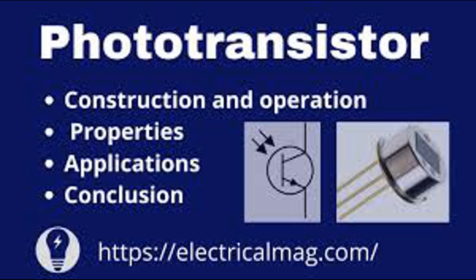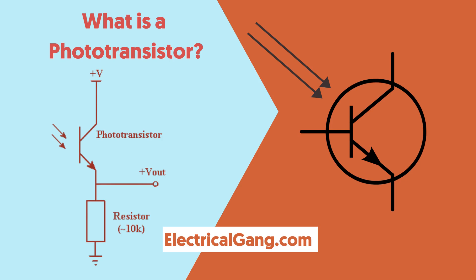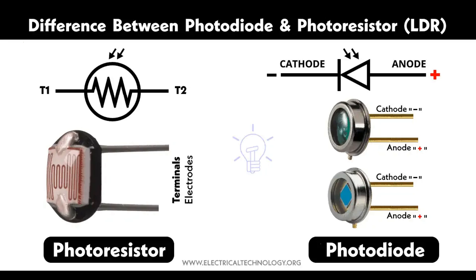Light meters use phototransistors to convert light intensity into an electrical signal proportional to the amount of light detected. Used in cameras for exposure control, scientific instruments, and environmental monitoring systems. Optical switches detect the presence or absence of an object, or count items — phototransistors trigger a response when an object interrupts or reflects a light beam. Commonly used in manufacturing for conveyor belt monitoring, automated sorting systems, and position sensing.